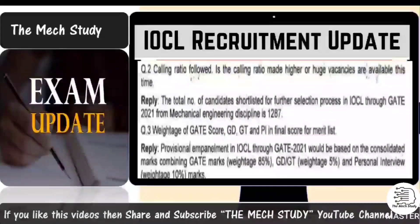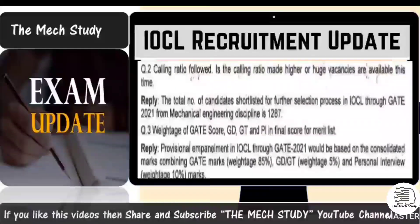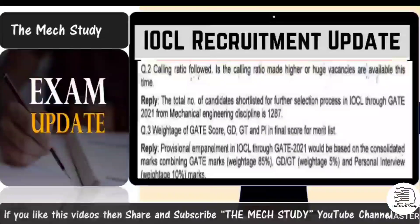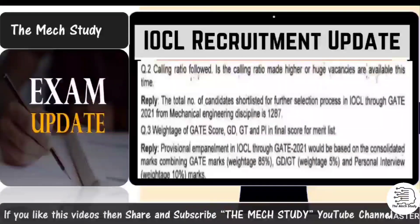Regarding the GATE score weightage for GD, GT, and PI in the final merit list, IOCL replied that the provisional recruitment through GATE is based on 85% weightage on the GATE scorecard, 5% weightage on GD and GT, and 10% weightage on the personal interview. This clarifies that if your GATE score is very good, you will most likely be selected in the final round.